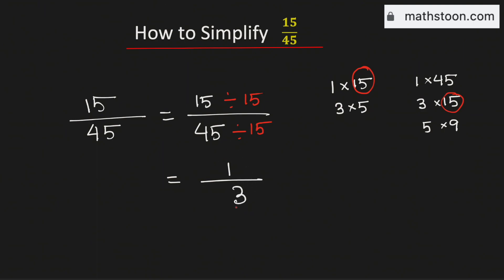And we know that 1 over 3 cannot be simplified further. So we say that 1 over 3 is the simplified reduced form of the fraction 15 over 45, and this is our final answer.